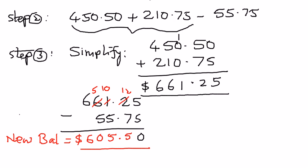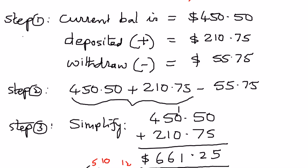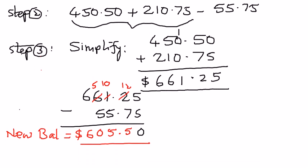What did we do here? If we were to recap, we had $450.50 in our checking account. That was our current balance. We deposited $210.75. We add those two numbers. Depositing means addition. And then we wrote out a check. That means we withdraw some money from our checking account. So withdrawing means subtraction. So we subtract $55.75. So we added the two positive numbers and then subtracted from the result. Therefore, we came up with a new balance in our checking account equal to $605.50.